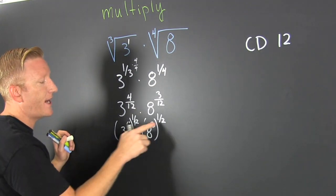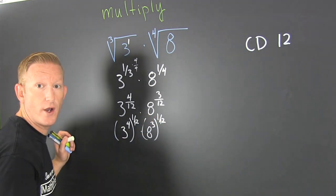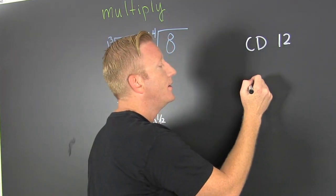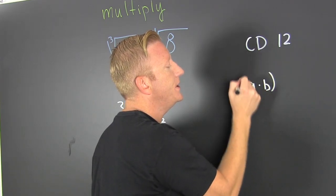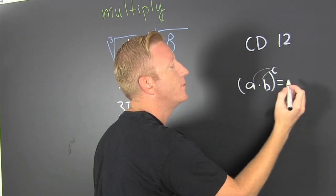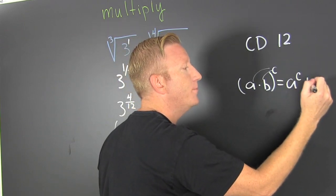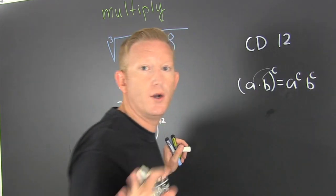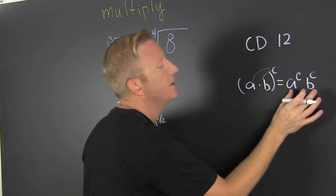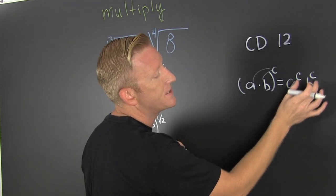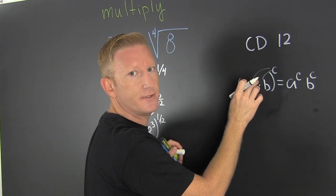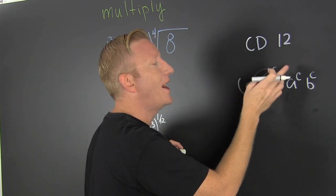Now that both of these are to the one-twelfth power, I can use this property: A times B to the C equals A to the C times B to the C. But what we have is the reverse. If I have these guys to the same power, I can un-dis that. It's like distribution but not distribution. I call it dis.